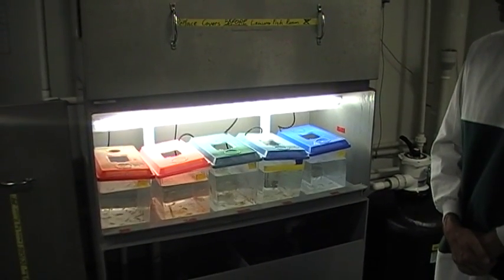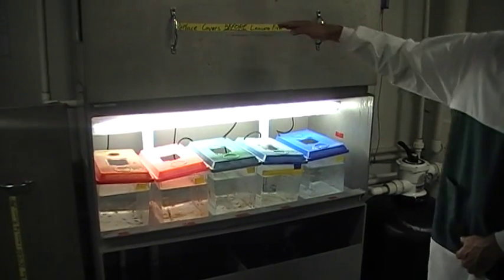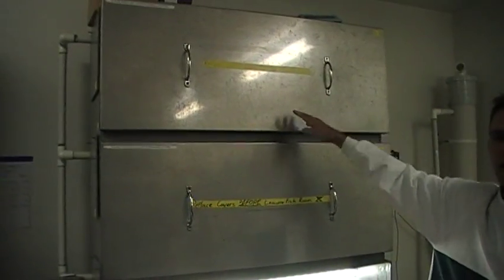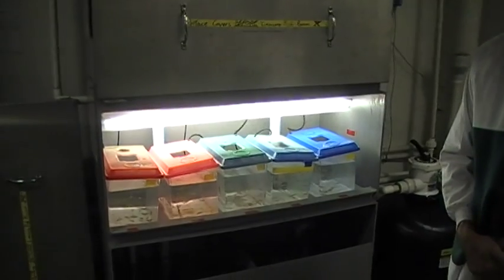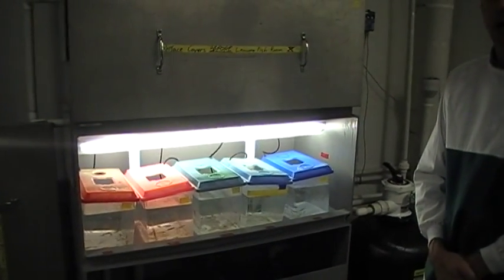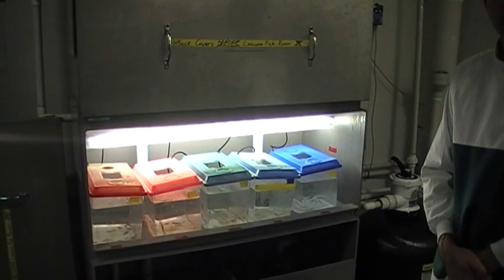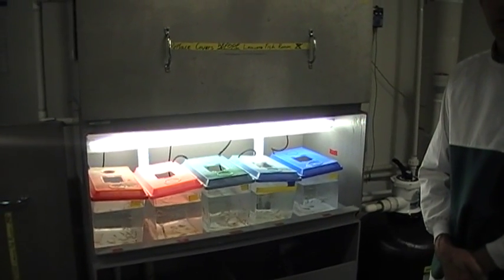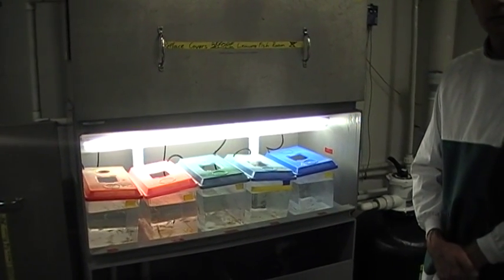So what we do is we have light chambers here, here and here with different daylight cycles so that the morning begins at different times and the eggs will be laid throughout the day so that we can inject them. So how do we get the eggs from the fish?